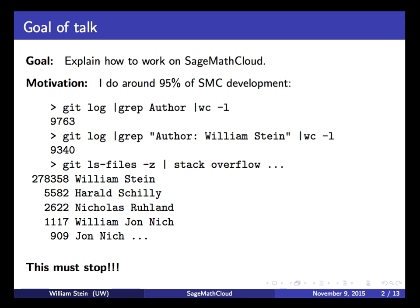The main problem is right now I do around 95% of SageMath Cloud development. I looked at the Git log recently and out of the 9,763 commits in the Git log for SageMath Cloud, 9,340 have me listed as the author, which is a pretty large percentage.